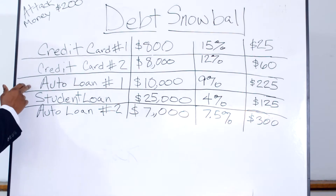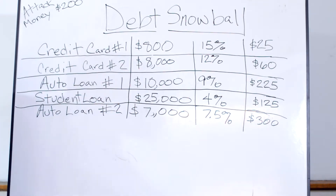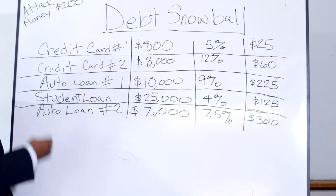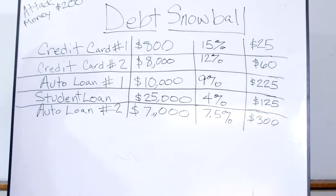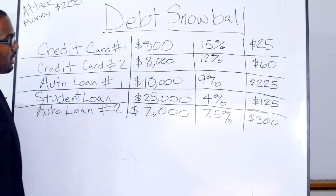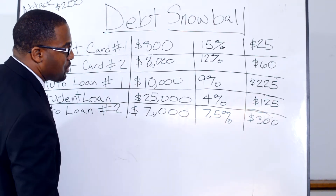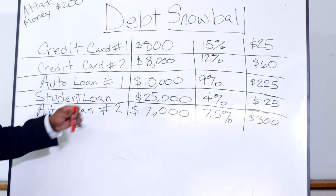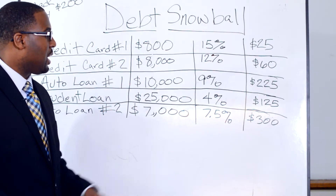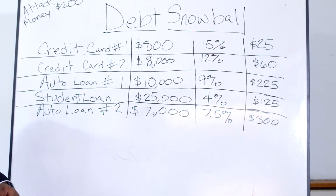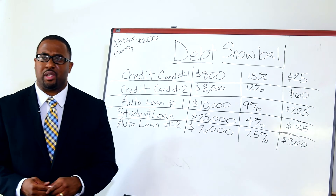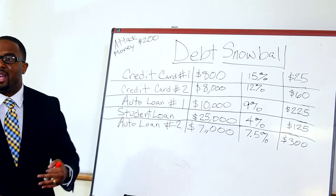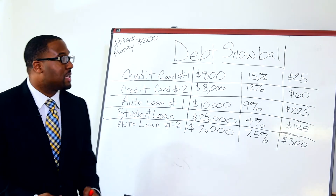John has two cars. On his first auto loan, he has $10,000 left at 9%, paying $225 a month. On his second auto loan, it's a $7,000 balance with a 7.5% interest rate, paying $300 a month. John also has student loans — $25,000 left at 4%, paying $125 a month. This is a very typical situation. It doesn't matter what your situation is; let's talk about how the debt snowball method can apply to your personal situation.